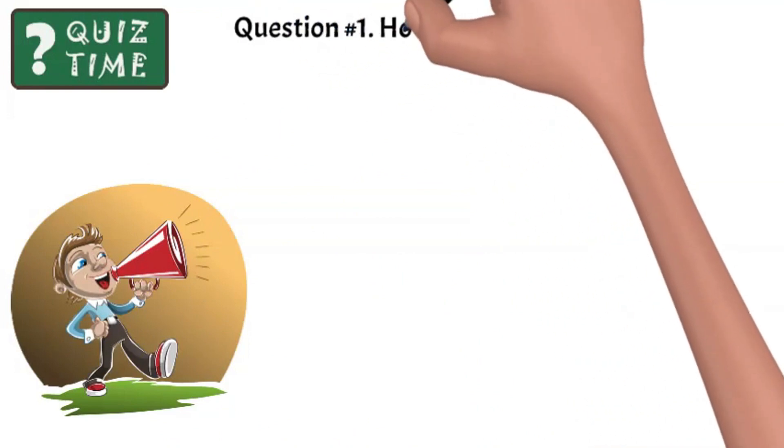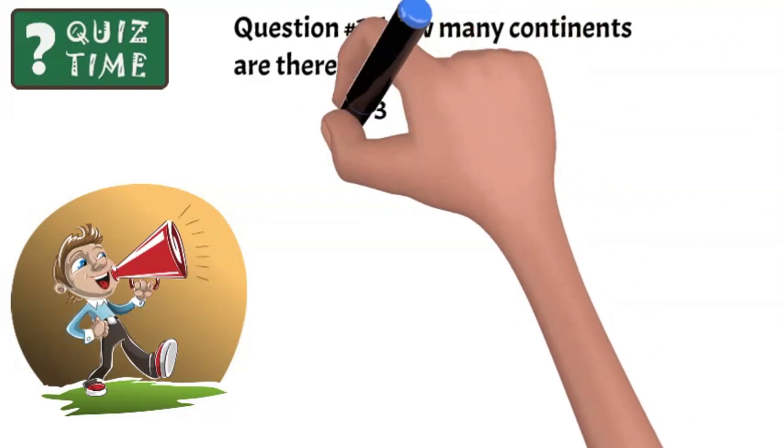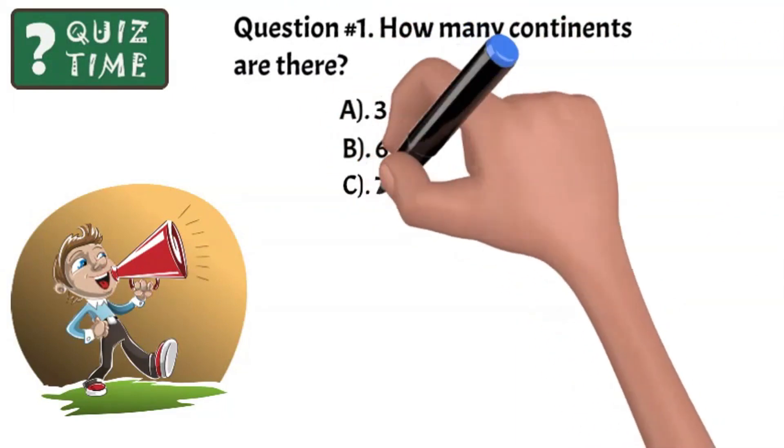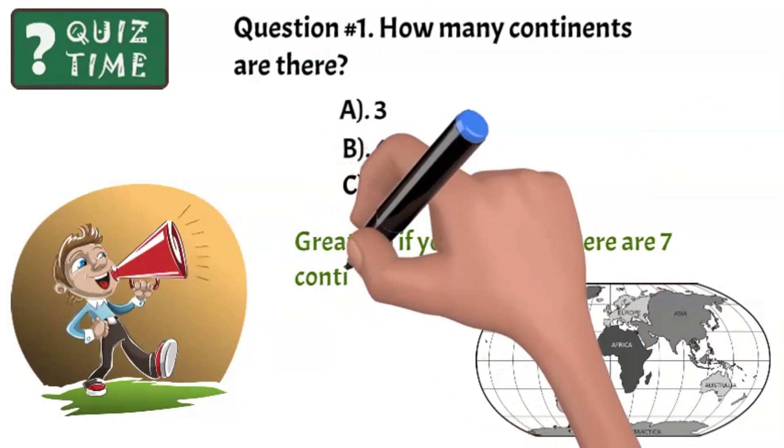Question number one: How many continents are there? Great job if you said C, seven. There are seven continents.